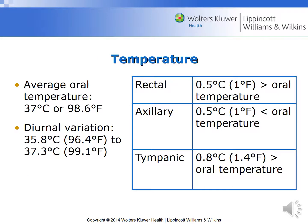The main points of temperature to understand: rectal temperature is the most accurate and will be roughly about one degree Fahrenheit greater than the oral temperature. Axillary will be about one degree Fahrenheit less than oral temperature. Tympanic is about 1.4 degrees Fahrenheit greater than oral temperature. Average temperature is 37 degrees Celsius or 98.6 degrees Fahrenheit, with a diurnal variation ranging from 96.4 to 99.1 degrees Fahrenheit.